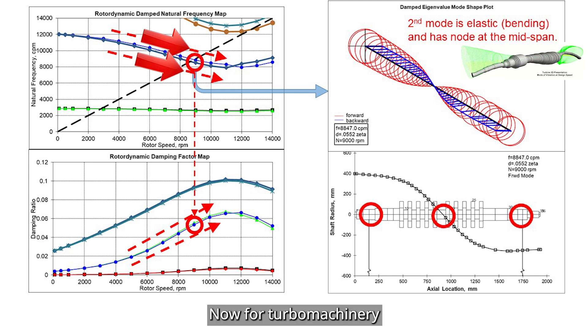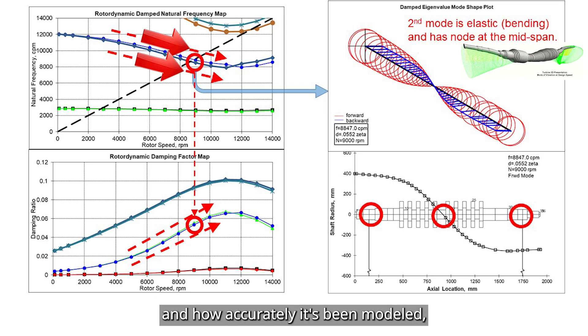Now, for turbo machinery, a damping ratio below 0.05, which is equivalent to a log decrement of around 0.31, can be a concern. It does not always mean instability, but it might allow some sub-synchronous whirl to show up. The actual threshold really depends on your machine and how accurately it's been modeled. But this gives you a rough guideline.